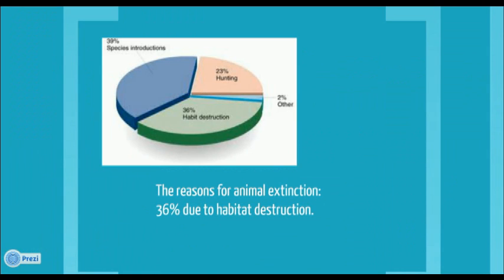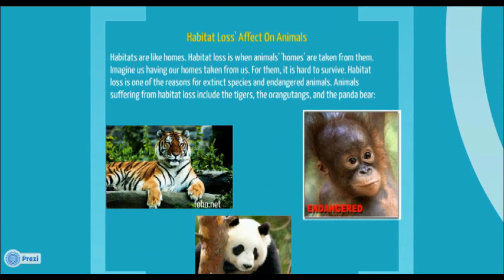This is a graph where they show how animals go extinct. 36% is because of habitat destruction. Habitat loss has a lot of effects on animals, such as tigers, orangutans, and pandas. They are endangered, and some animals are already extinct because their homes were taken from them.